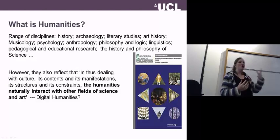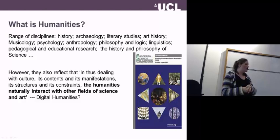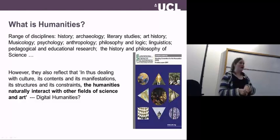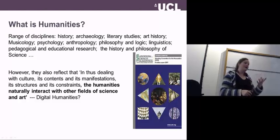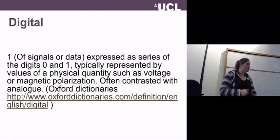They named a whole load of disciplines — the usual suspects. They also reflected that it's in dealing with culture, its contents and manifestations, its structures and its constraints, that the humanities naturally interact with other areas of science and art. One question I'll leave with you is: is this where digital humanities intersects with these questions?